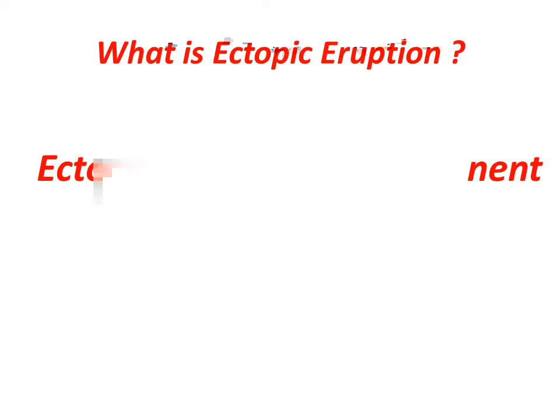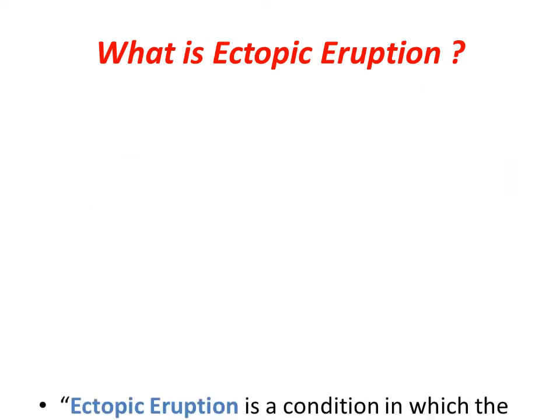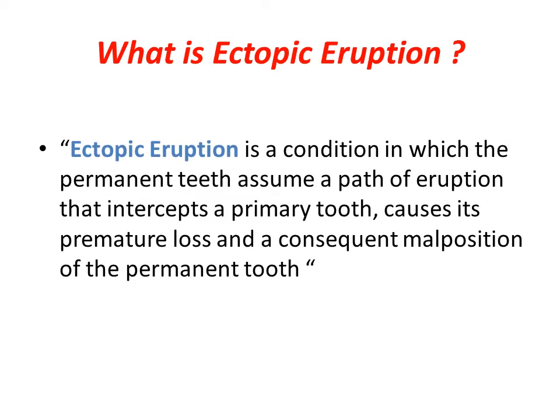We want firstly to define what is ectopic eruption. Ectopic eruption is a condition in which the permanent teeth assume a path of eruption that intercepts a primary tooth, causes its premature loss, and a consequent malposition of the permanent tooth.